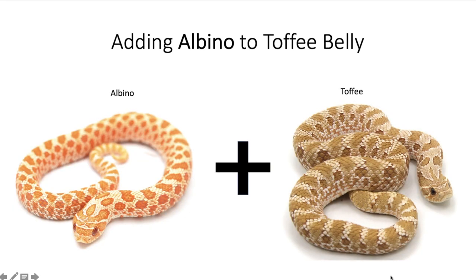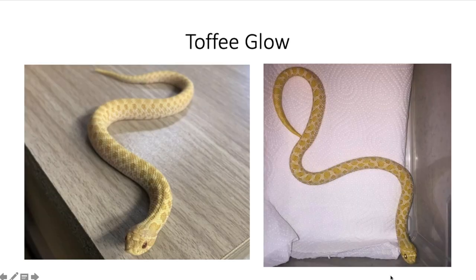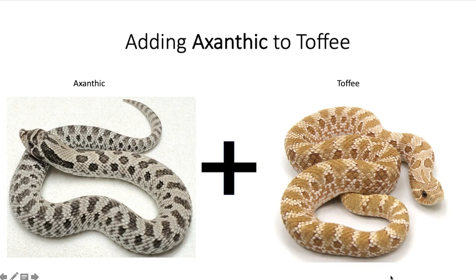Now let's get into the recessive genes mixed with toffee. The first one is the albino — when you mix albino and toffee together you get what's called a toffee globe: basically a light yellow animal. It actually looks very similar to the arctic albino. My snake Noodle is an arctic albino — he's a yellow snake — and when I saw pictures of the toffee globe, that's the first thing I thought of.